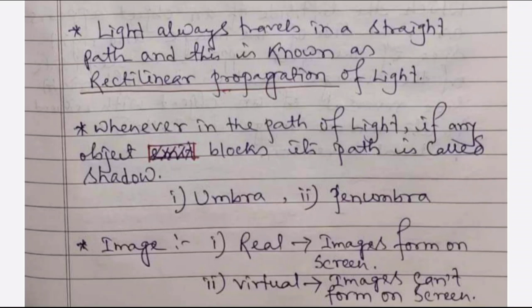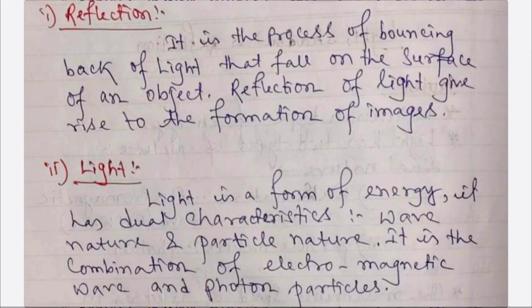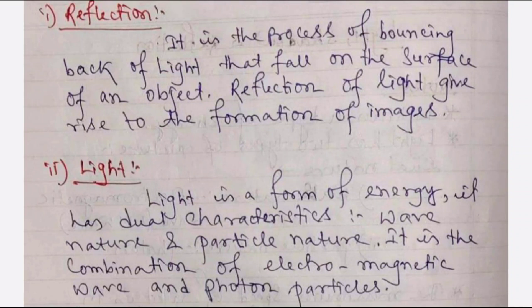Light can also form images. There are two types of images: one is called a real image — when the image forms on a screen, that is called a real image. Another type is a virtual image — images that cannot form on a screen are called virtual images. The next topic is reflection: it is the process of bouncing back of light that falls on the surface of an object, and reflection of light gives rise to the formation of images.